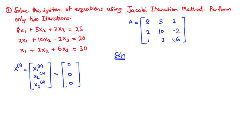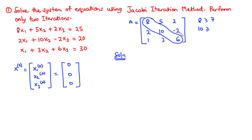A is diagonally dominant if the absolute value of each diagonal element is greater than or equal to the sum of the absolute values of the remaining elements in that row. Checking: |8| = 8 ≥ |5| + |2| = 7; |10| = 10 ≥ |2| + |-2| = 4; |6| = 6 ≥ |1| + |3| = 4. Since all three conditions hold, the matrix A is a diagonally dominant matrix.